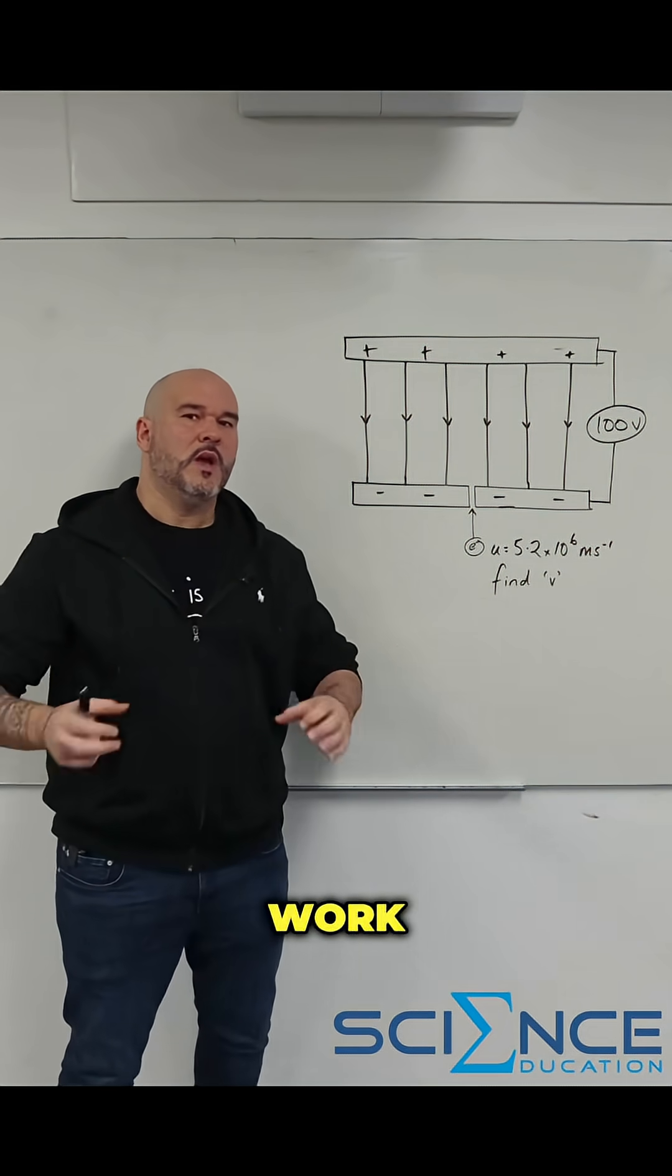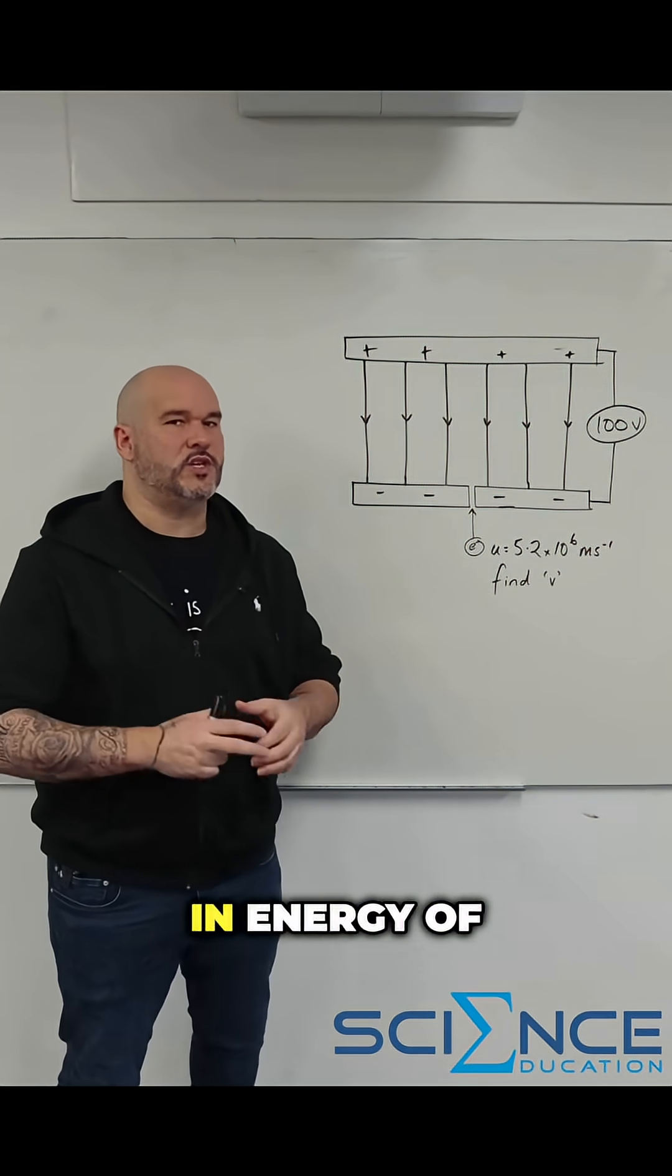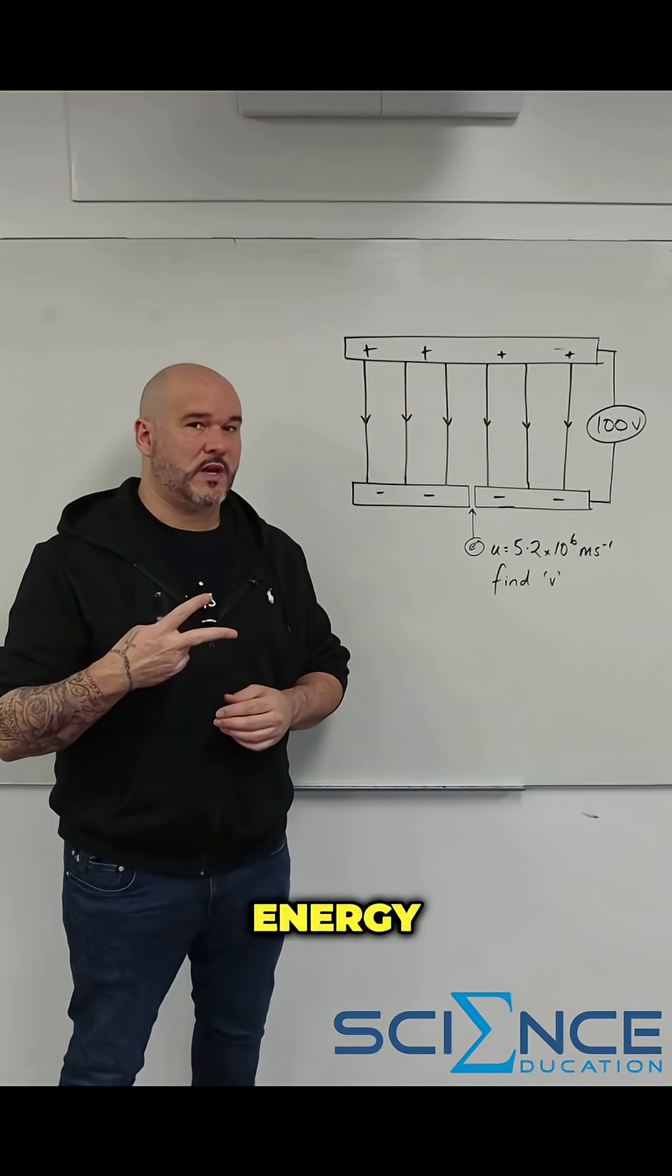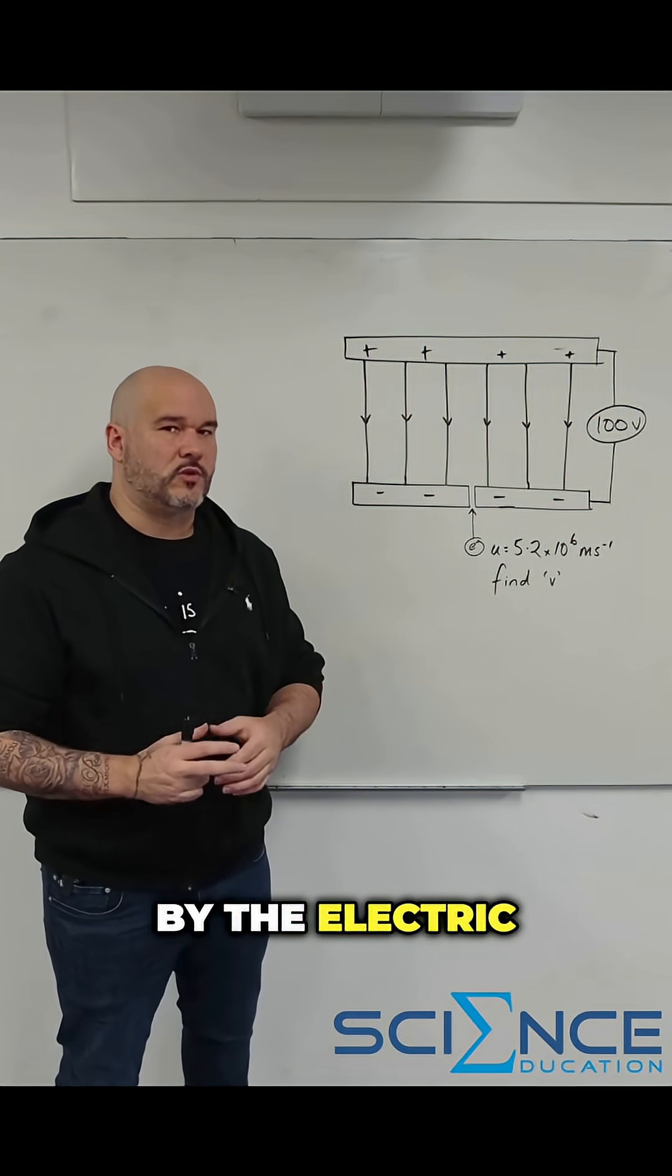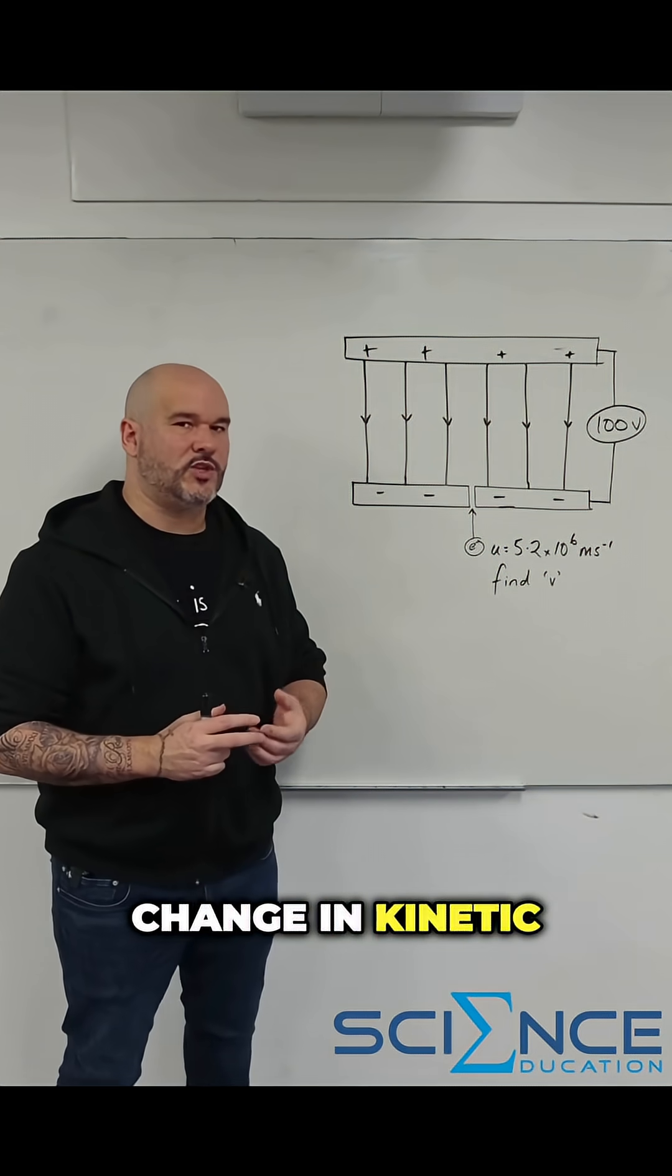So what is work? Work is simply just the change in energy of an object and there's two main types of energy, kinetic and potential. Now what we consider is the work done by the electric field results in a change in kinetic energy of the electron.